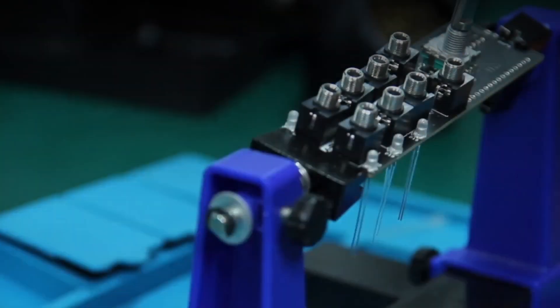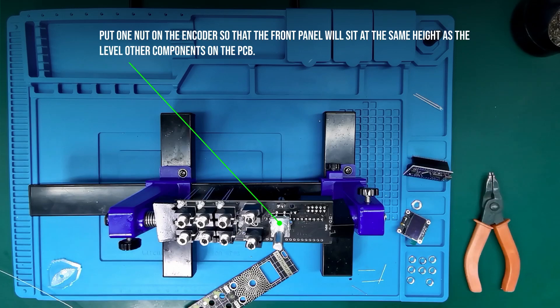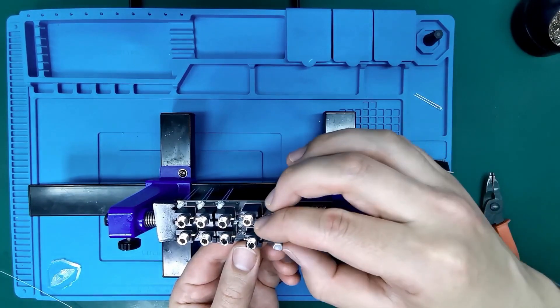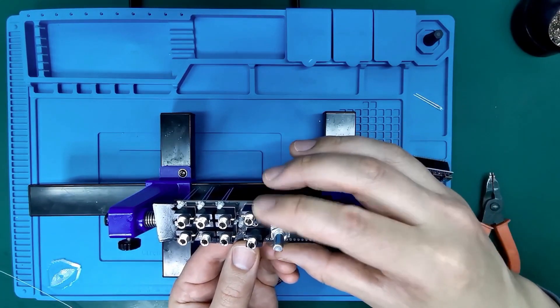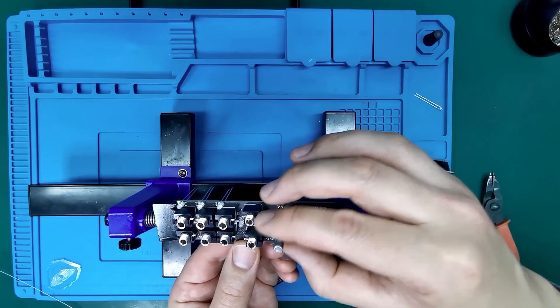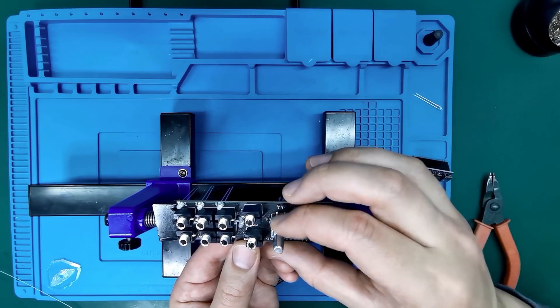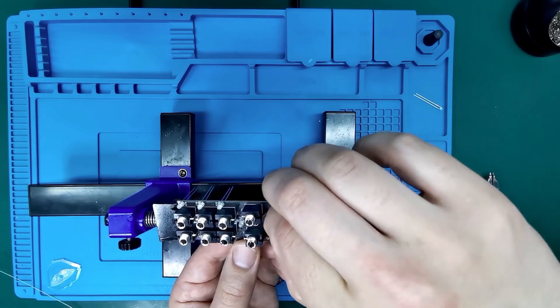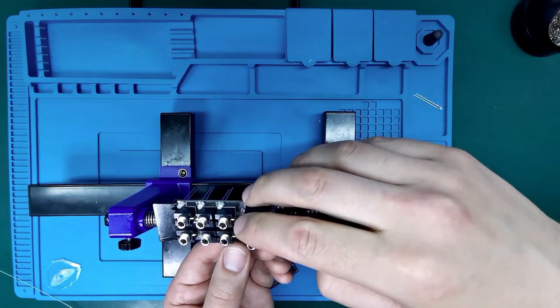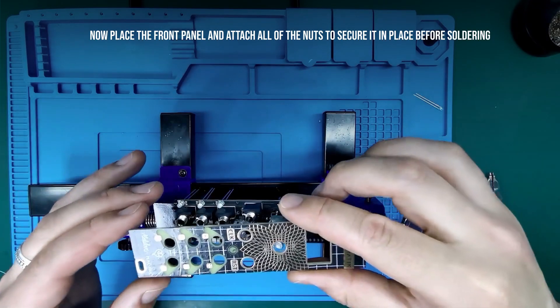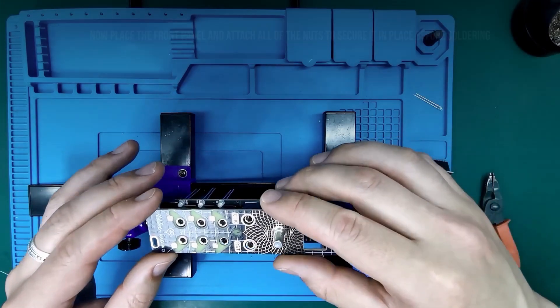I will use an extra nut and attach it to the encoder so that the front panel will sit at the same height as the level of the other components on the PCB. Now place the front panel and attach all of the nuts to secure it in place before soldering.